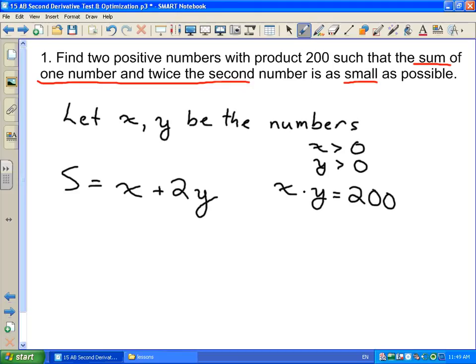So we've got the thing that we want to optimize, our sum here, and we've got this other relationship between x and y. If we're going to take the derivative of this, we don't want to have two variables in here, so we want to express this as one variable. So let's express this whole thing in terms of x.